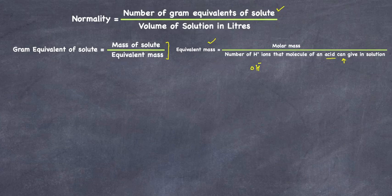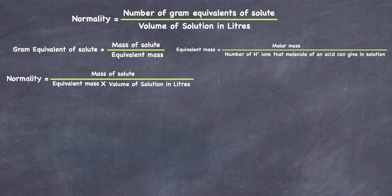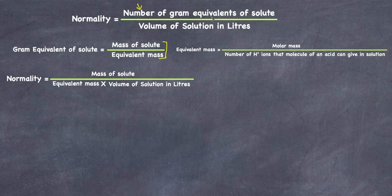The next step is to plug in the gram equivalent value into the normality formula. Normality becomes mass of solute divided by equivalent mass, all divided by volume of solution. So: N = (mass of solute / equivalent mass) / volume of solution.